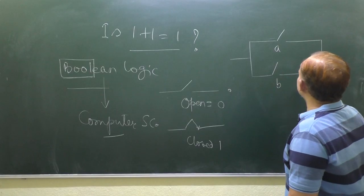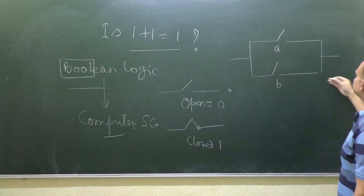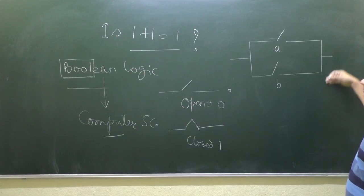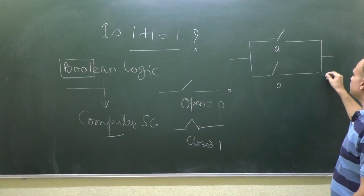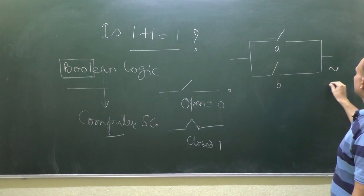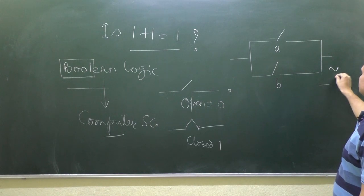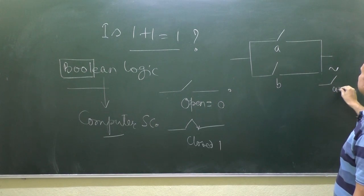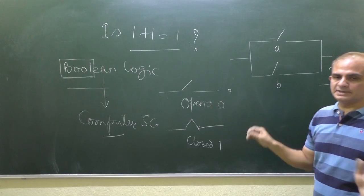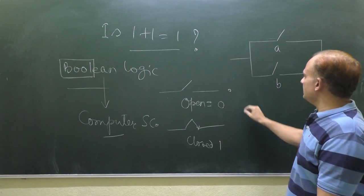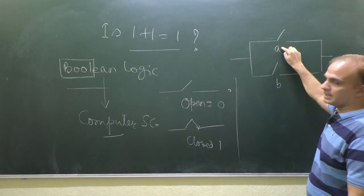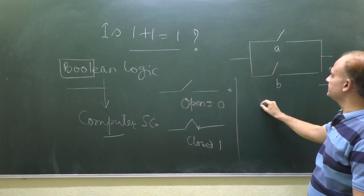Now, if two switching circuits are connected in parallel with switches A and B, George Boole said that its simplified equivalent circuit is A plus B.